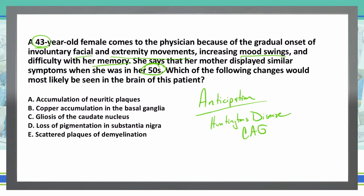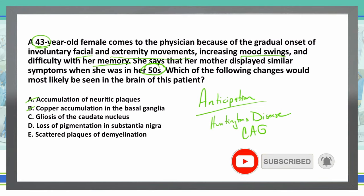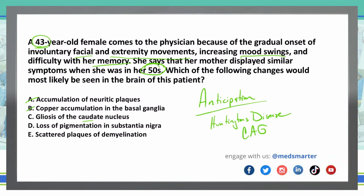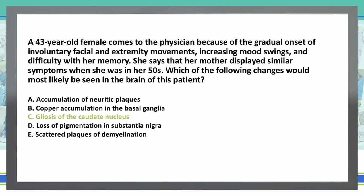Accumulation of neuritic plaques — nope, that's an Alzheimer's issue. Copper accumulation in the basal ganglia — nope, that would be Wilson's disease. Gliosis of the caudate nucleus — there's our caudate that we were looking for, so that might be our answer. Let's continue on and make sure we don't have any other possible answer choices. Loss of pigmentation in the substantia nigra — we know that's Parkinson's disease, so that is not the case. Scattered plaques of demyelination, which is multiple sclerosis — that's not our answer choice. Therefore, we're going with C: gliosis of the caudate nucleus.